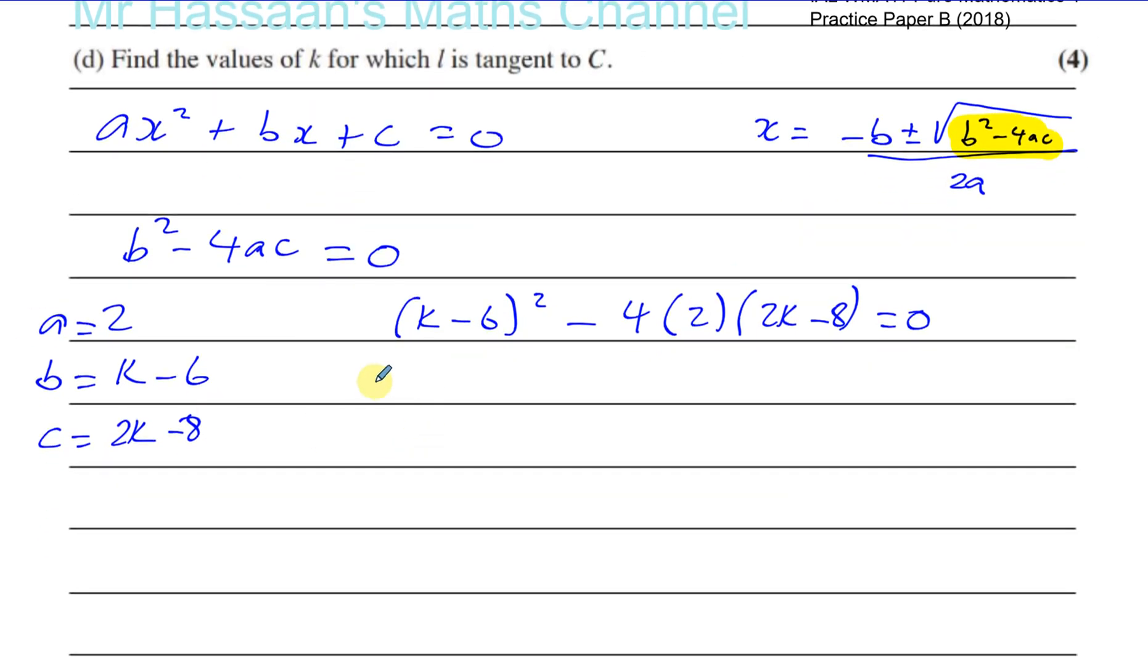So we're going to have here k squared minus 12k plus 36. When you square this bracket, it's k minus 6 times itself. You can do it by using the pattern for squared terms. Minus, this is going to be minus 8. Minus 8 times 2 is minus 16. So minus 16k. And minus times minus is plus. And 8 times 8 is 64. Equals zero. So now we can find the values of k. That's a silly mistake I wrote there. Mixing up my k's and my x's. There's no x's here now. This is a k.